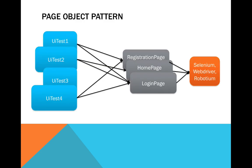The graphical representation is shown here. The library sits behind the page classes, and the page classes expose a natural language API — kind of natural language methods. Your test case calls these page-defined methods, so it doesn't need to know about specific API details of Selenium, WebDriver, or Robotium. That's basically the Page Object Pattern structure.